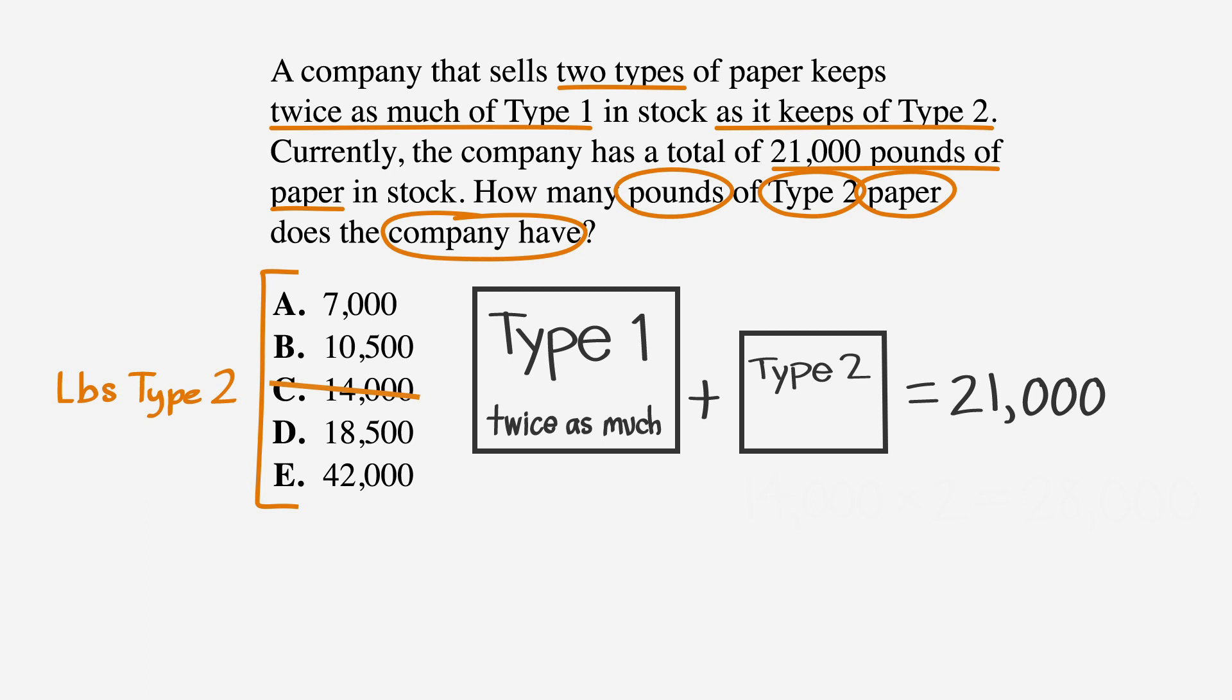Now we know that we need a smaller number. Let's try choice A, 7,000, since it's our smallest option. If Type 2 is 7,000, then Type 1 is twice as large. 2 times 7,000 equals 14,000. Let's add 14,000 plus 7,000. This gives us a sum of 21,000, which is exactly what we're looking for. Answer choice A is correct.